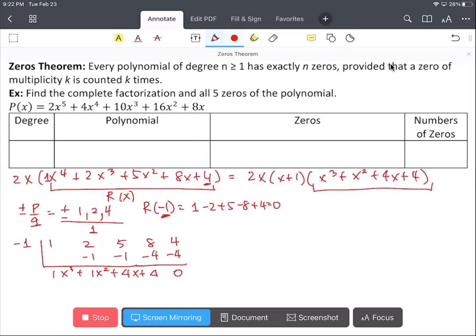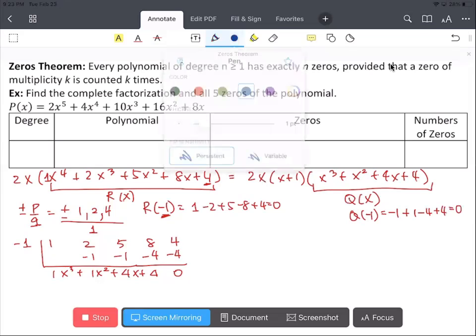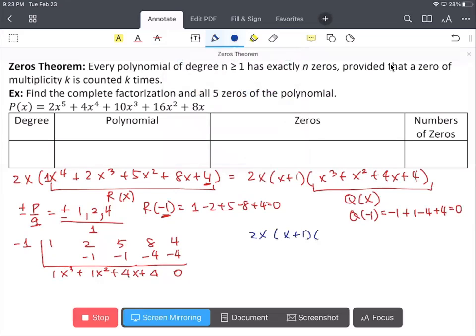Let's call this part q of x. And when I do q of negative 1, this equals zero. So we can say that that's a factor of q of x.